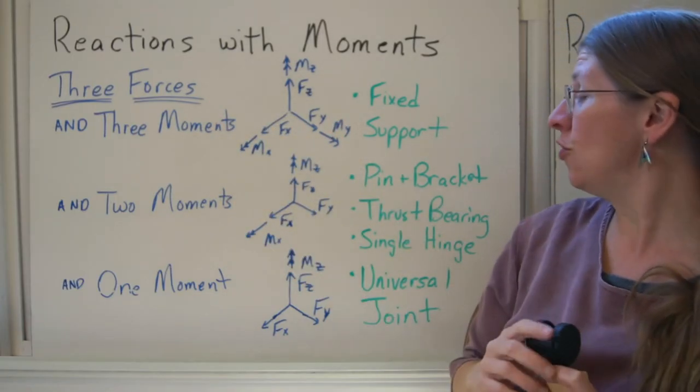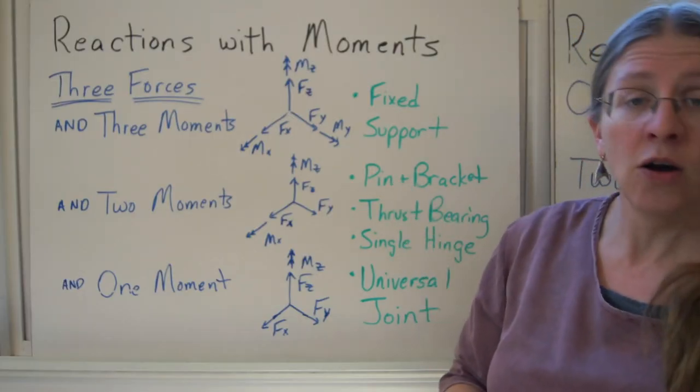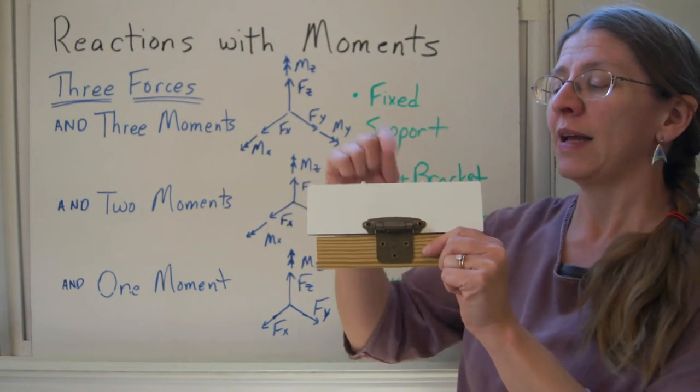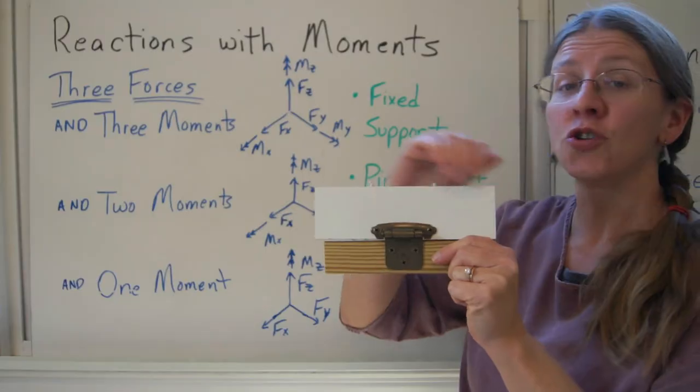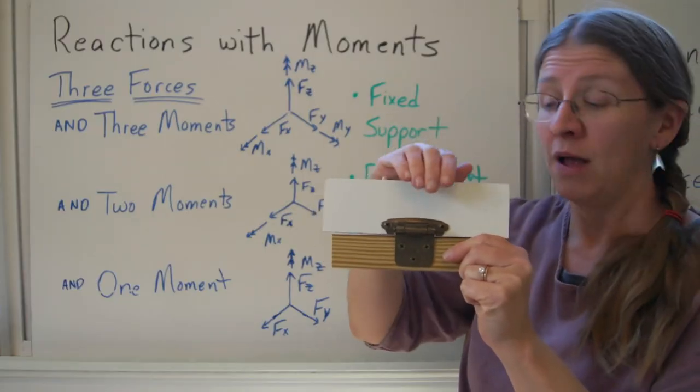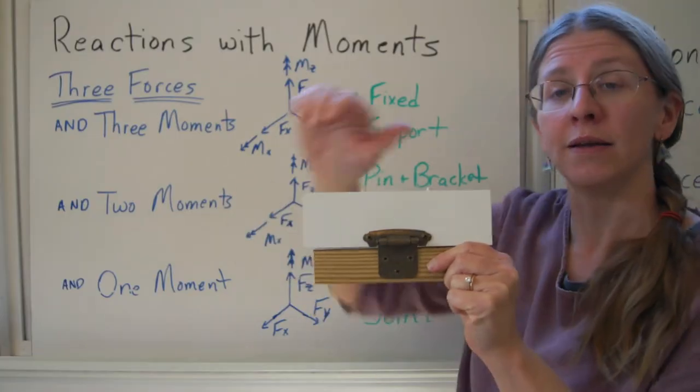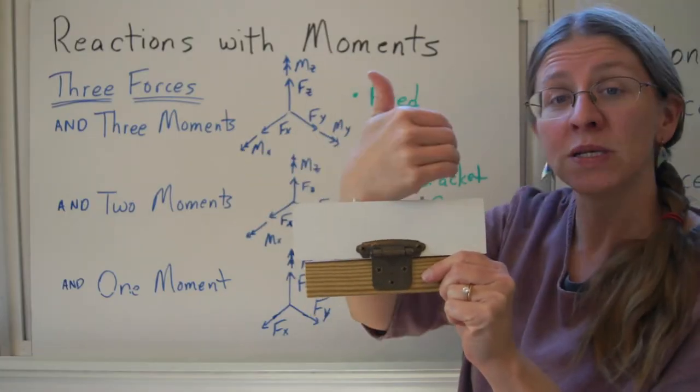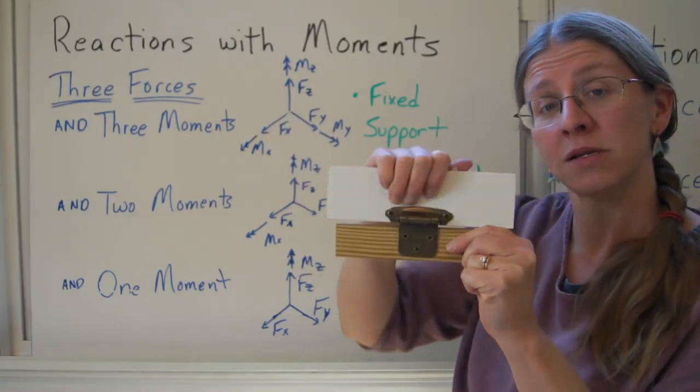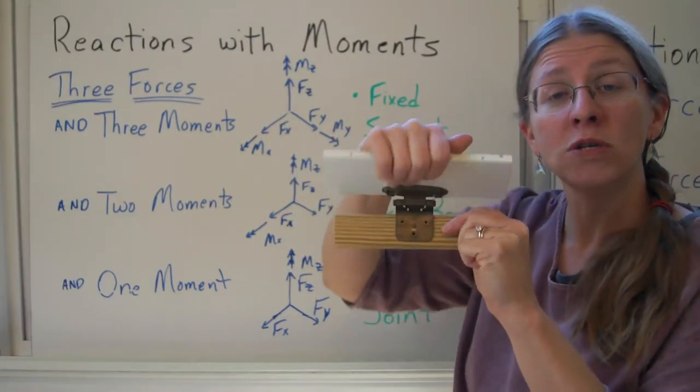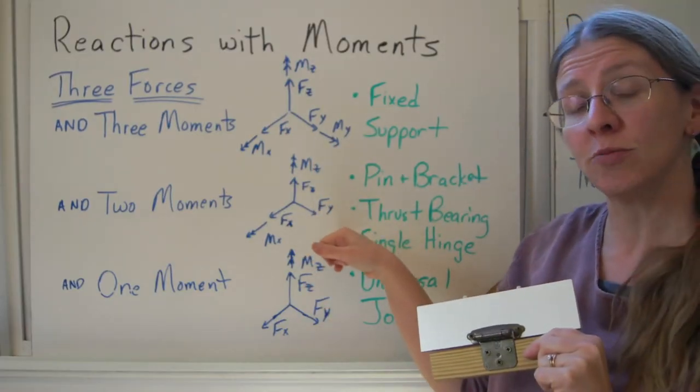You can get three forces and two moments from a thing called a pin and bracket or a thrust bearing or even a hinge. If I consider the free body diagram of this white piece of board, I can't translate it in any direction. I can't rotate it in this direction. That would be taking one end and lifting it up. I can't twist it in this direction, which would be sort of twisting it this way. But I can do this.